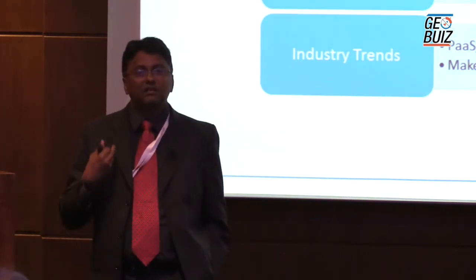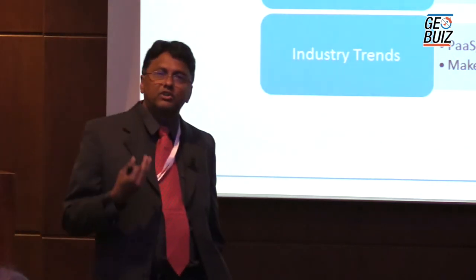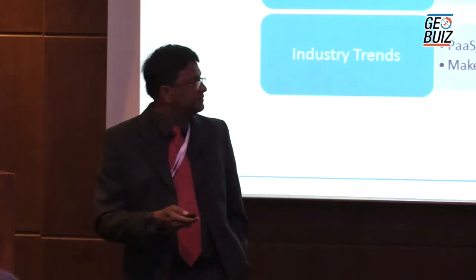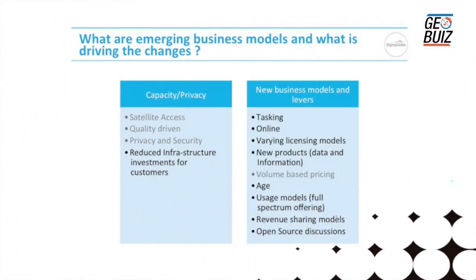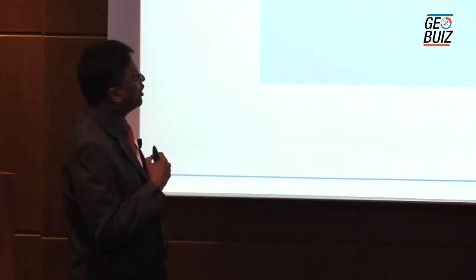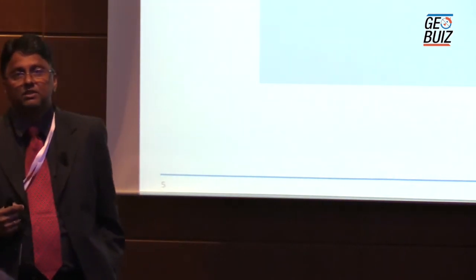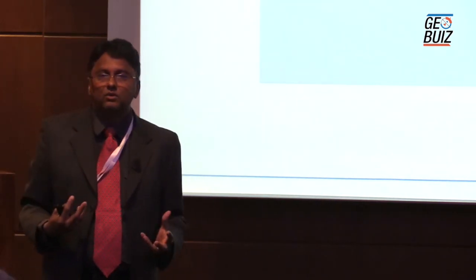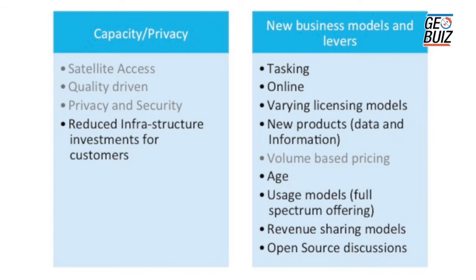The maker movement is also key — the new talent doesn't want to focus on traditional photogrammetry, GIS, or remote sensing. They want to create apps and solve problems. How are we reacting in terms of business models? For governments that want privacy and specific capacity with controlled access, that business model will stay for a long time. What we are changing there is reducing infrastructure investments — dishes are becoming smaller and cheaper. We're working to make infrastructure more affordable not just for major defense nations but for those with smaller budgets.